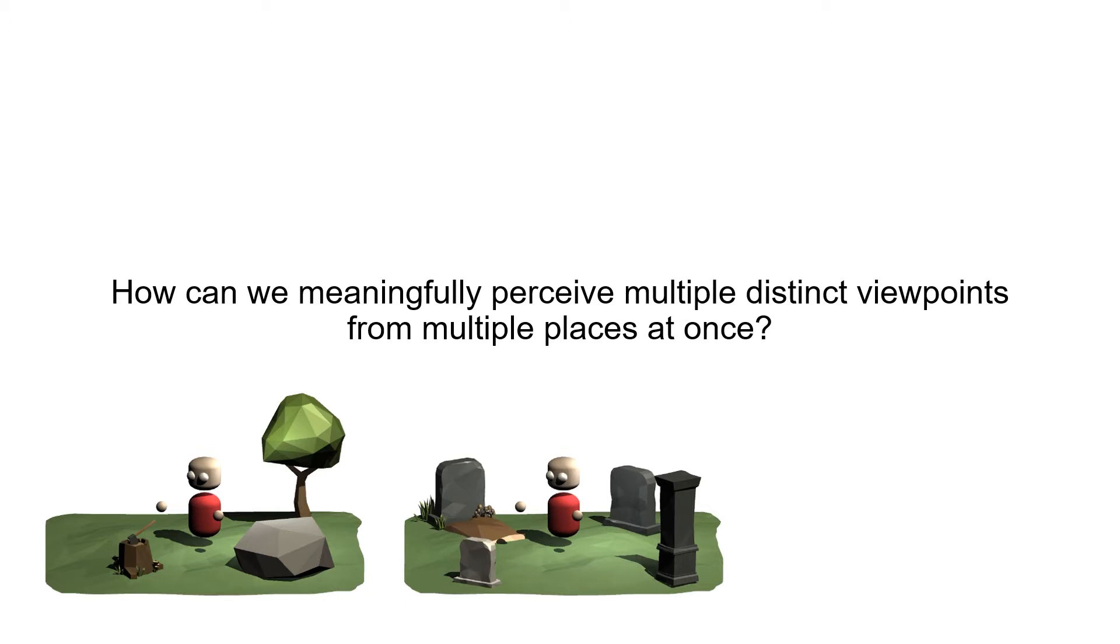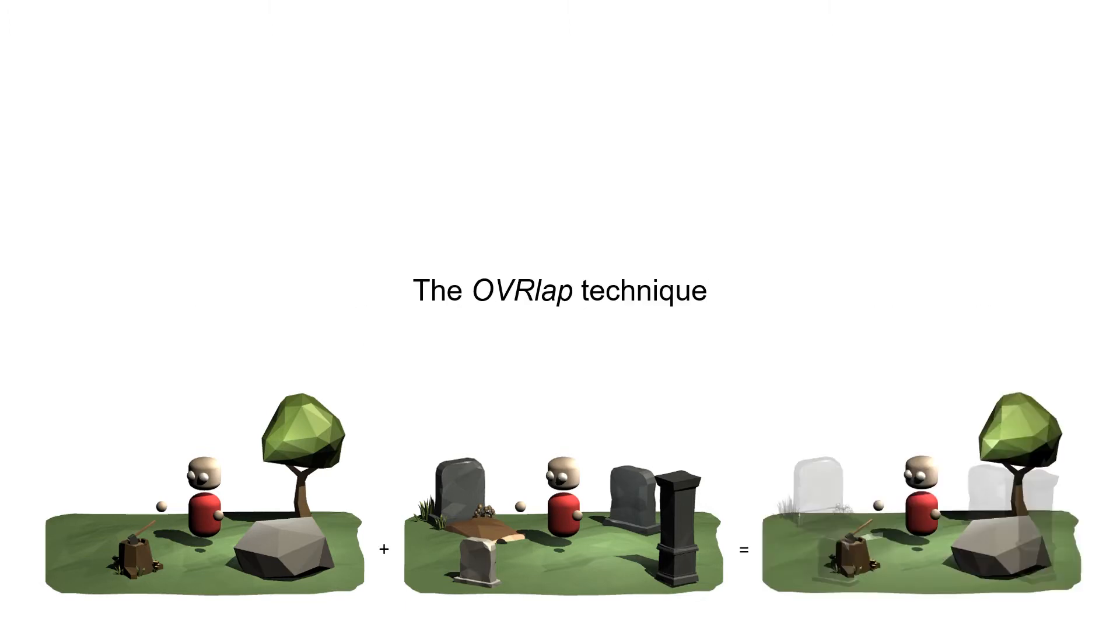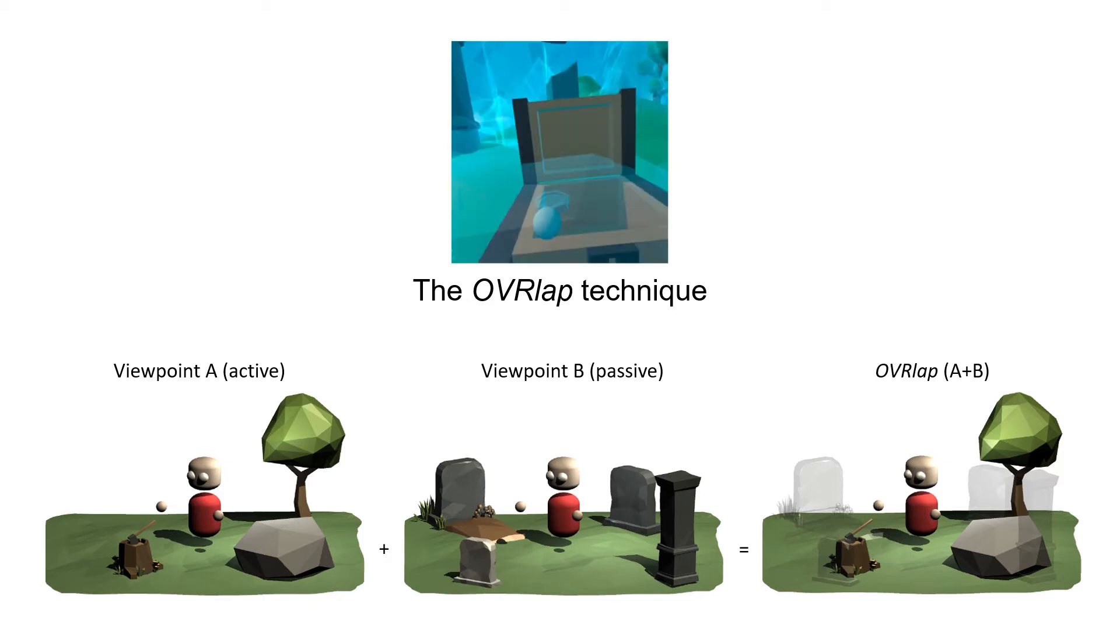That leads us to OVRlap, which is an interaction technique that spatially layers multiple distinct and distant locations on top of each other so that the user can perceive and interact across these viewpoint locations from a first-person perspective.